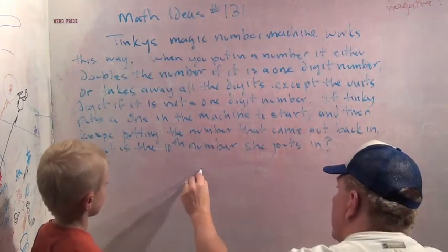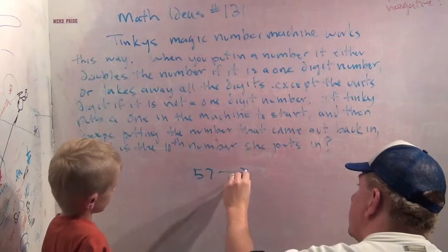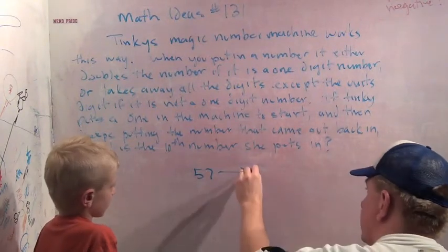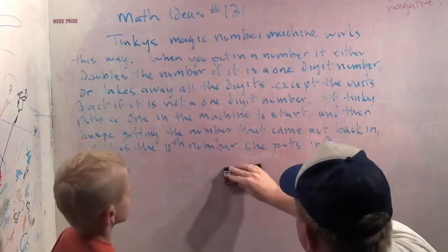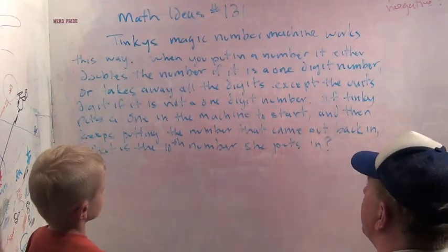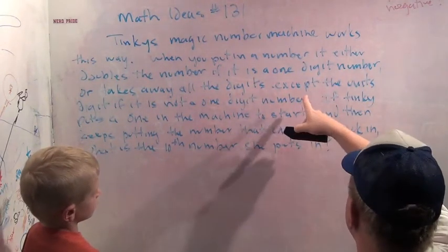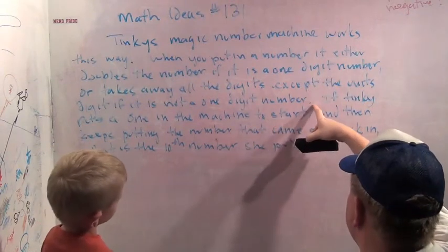And it would turn 57 into seven. Very good. So it either doubles the number if it's a one-digit number, or it takes away all the digits except the unit's digit if it's not a one-digit number.